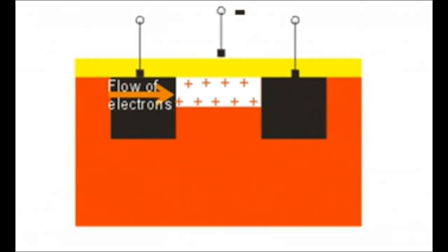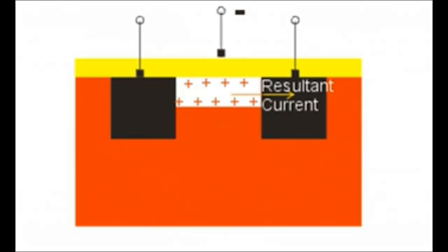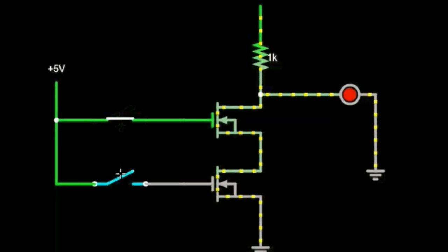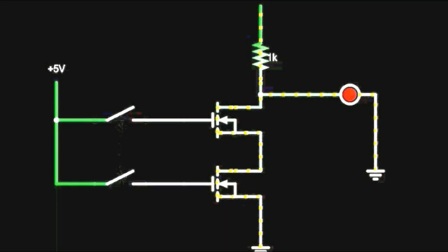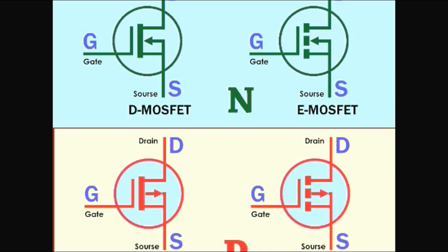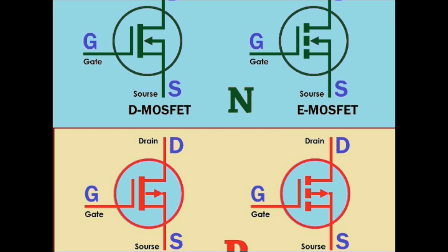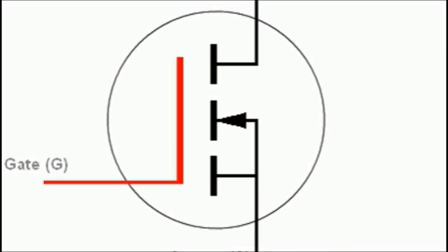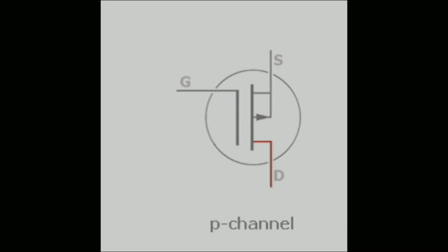In the depletion type, the channel is created by the manufacturer, and by applying voltage to the gate we can change the width of the channel. While the Enhancement MOSFET is by default off without applying voltage to the gate, the Depletion MOSFET is on due to the presence of the channel, and by applying a negative voltage to the gate we can reduce the width of the channel. In general, Enhancement and Depletion MOSFETs are made in two types, N and P. In the N type, the current flows from drain to source, and in the P type, the current flows from source to drain.